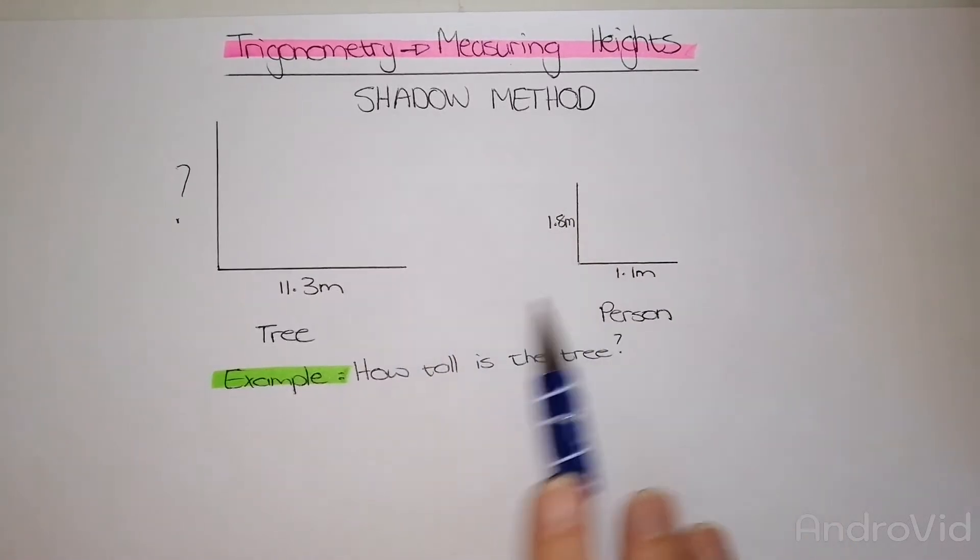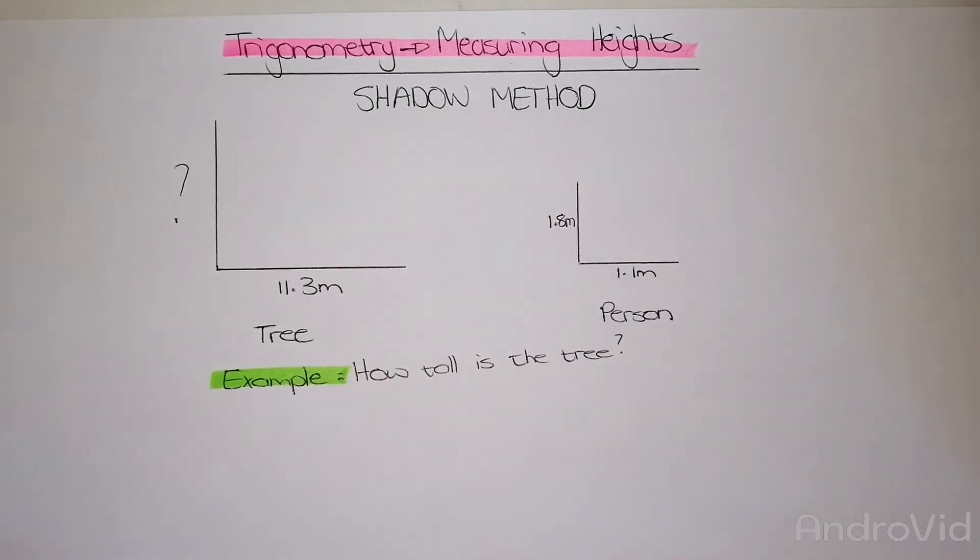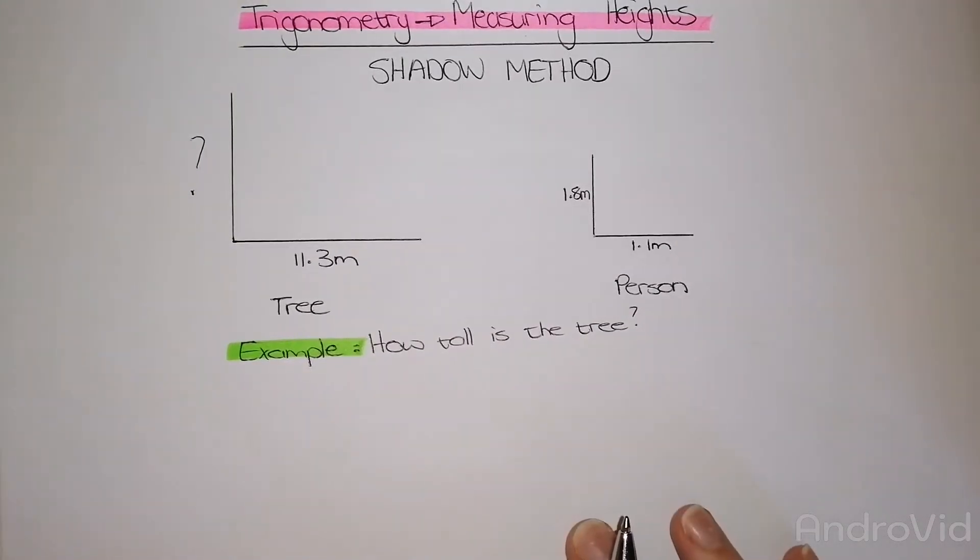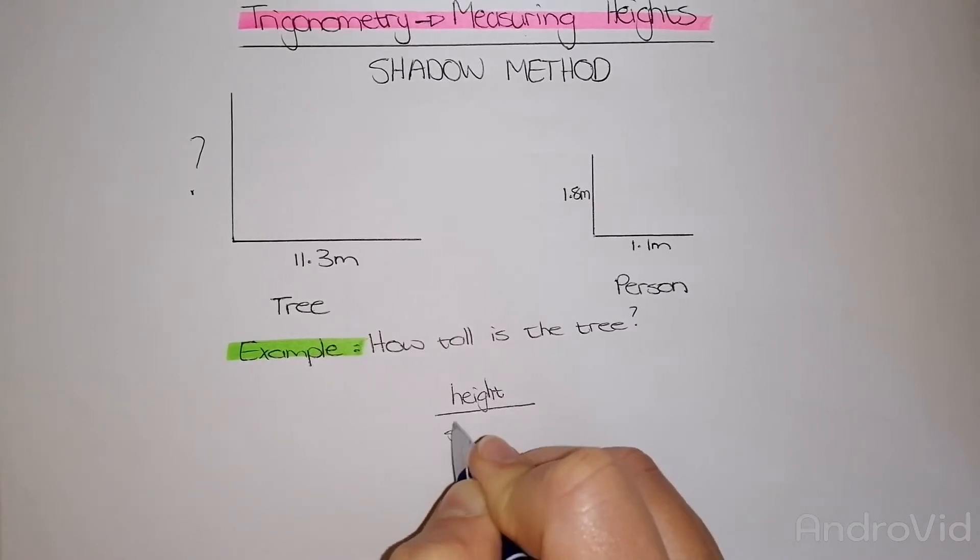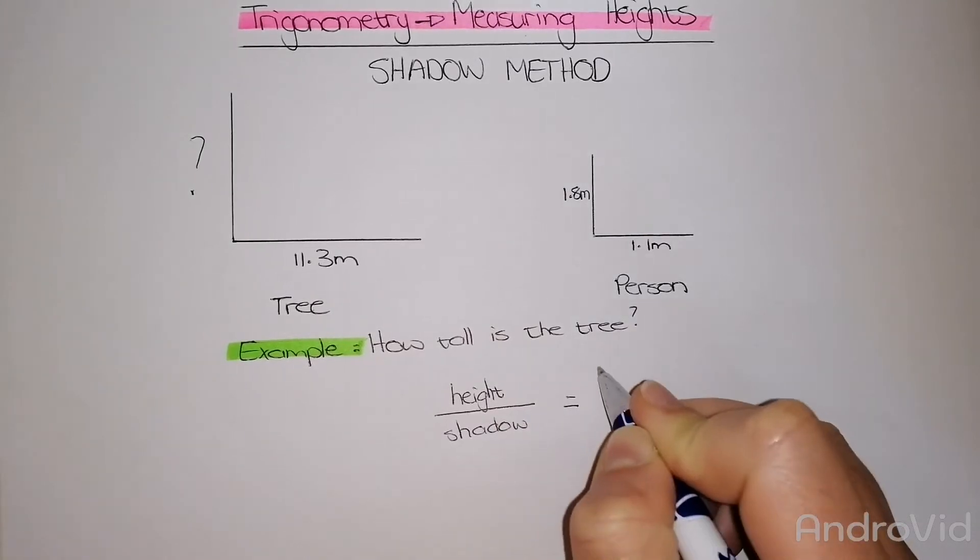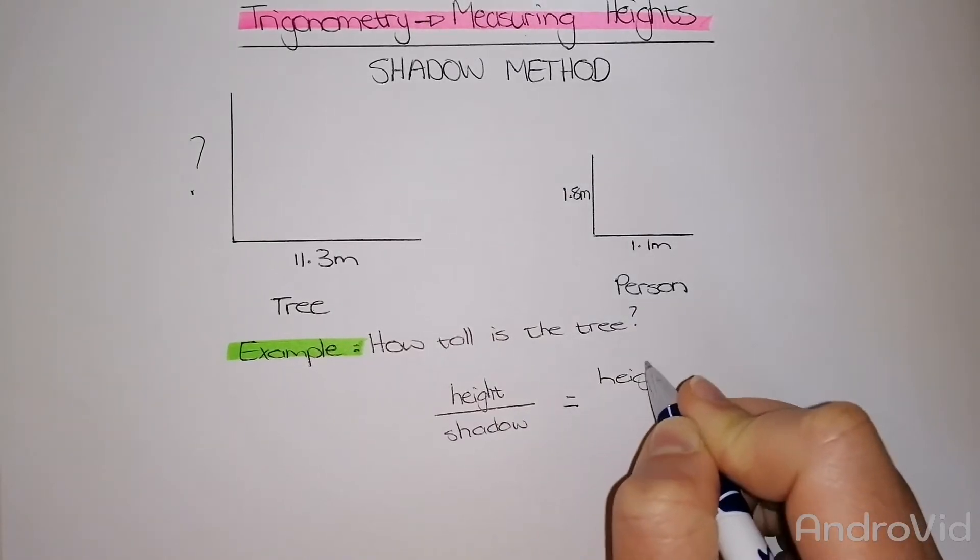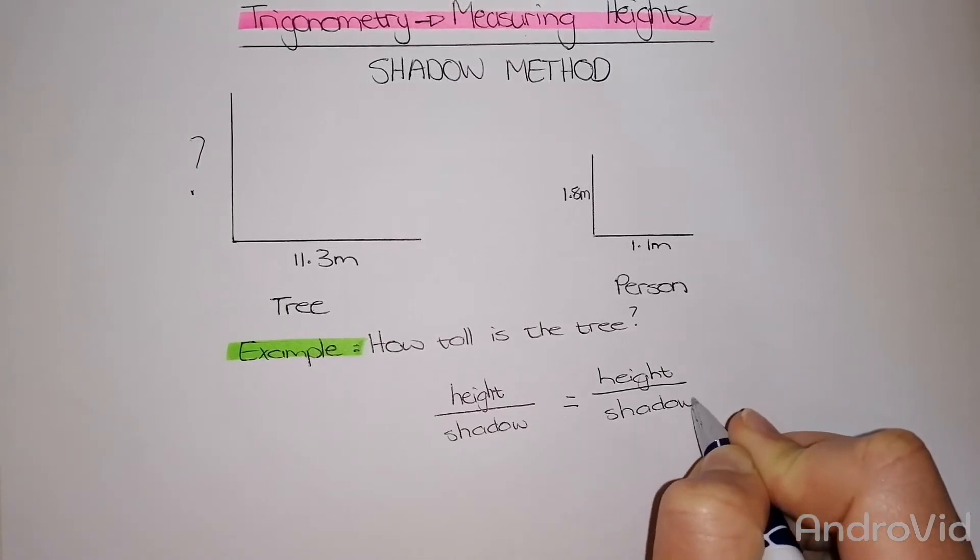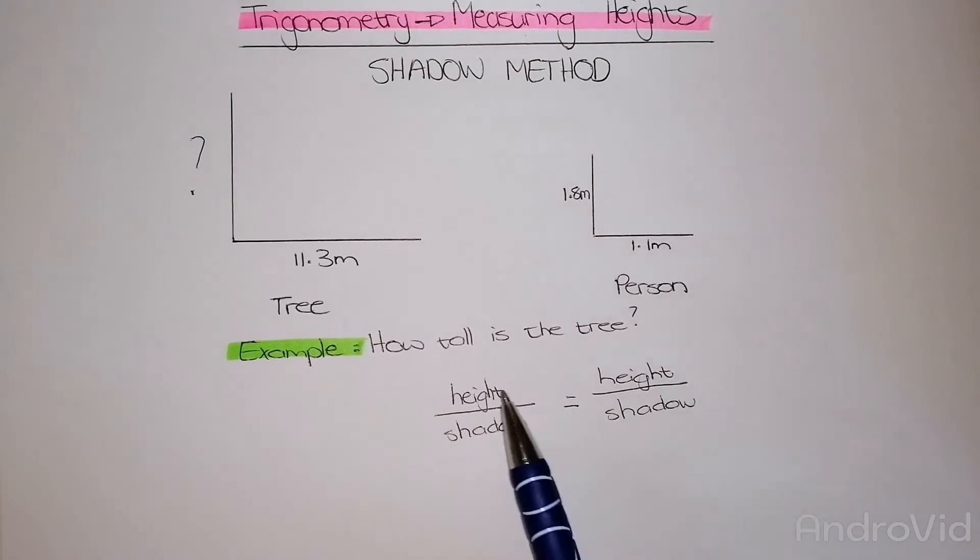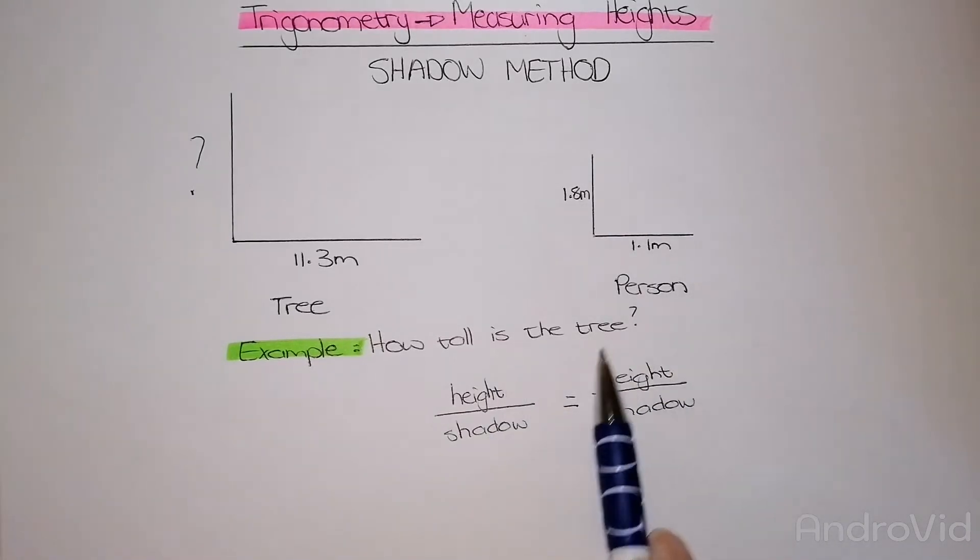So the rule for using the shadows method is as follows: I need to have the height over the shadow and put that equal to the height over the shadow. Very important that the height and the shadow of each object need to be in the same fraction. Do not mix them up.